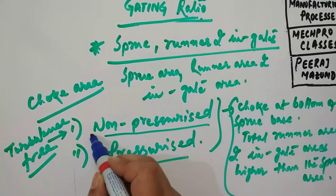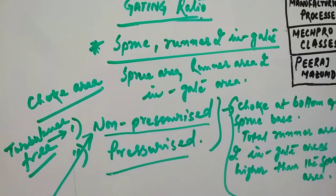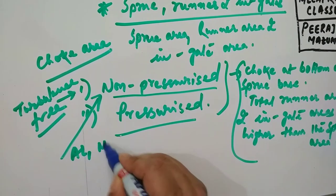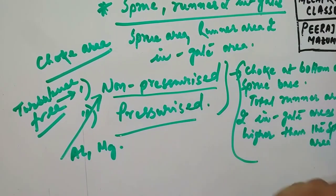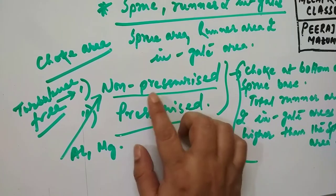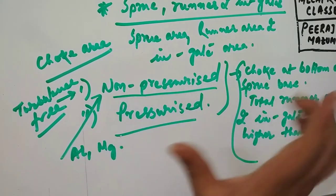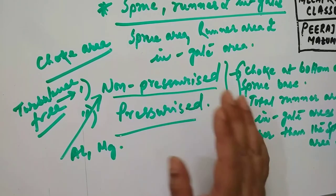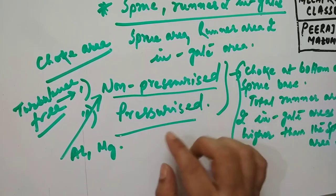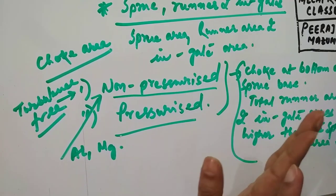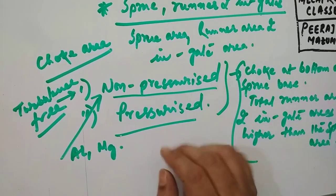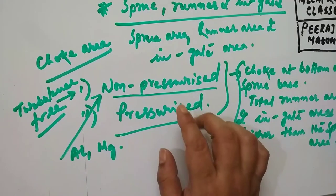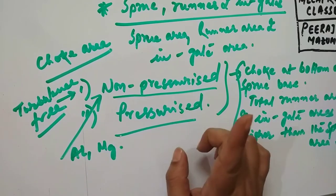Aluminum and magnesium alloys are very much suitable for this non-pressurized type of gating system. This system has tapered sprues, sprue base oils and pouring basins as well. When the metal enters the molding cavity through multiple ingates, the cross section of the runner should accordingly be reduced.